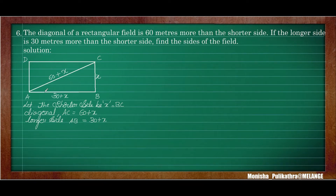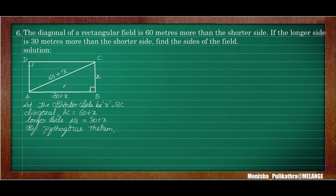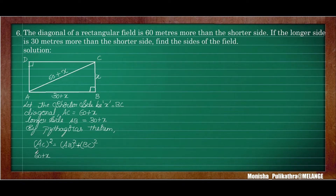In a rectangle the corner is 90 degrees, so this forms a right angle triangle and we can apply Pythagoras theorem. By Pythagoras theorem, AC squared equals AB squared plus BC squared. So 60 plus x whole squared equals 30 plus x whole squared plus x squared. Expanding using the a plus b whole square formula.